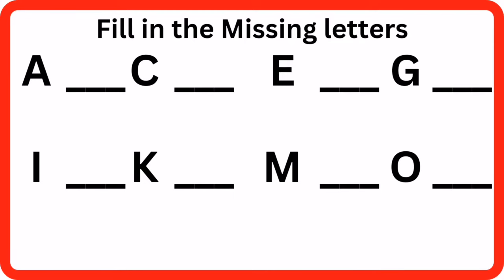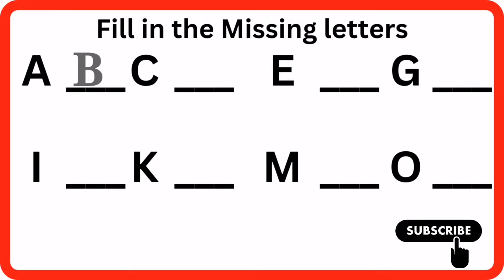Words come after letter A. B. Nice. Words come after letter C. D.